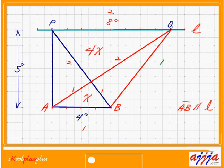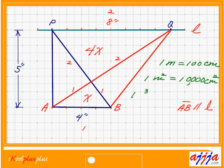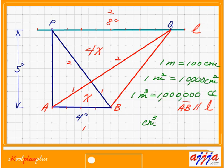Let's check one more thing. 1 meter is 100 centimeters. What about 1 square meter — how many square centimeters? That's 100 squared, which is 10,000 square centimeters. What about 1 cubic meter in cubic centimeters? That's 100 cubed, which is 1,000,000 cubic centimeters.